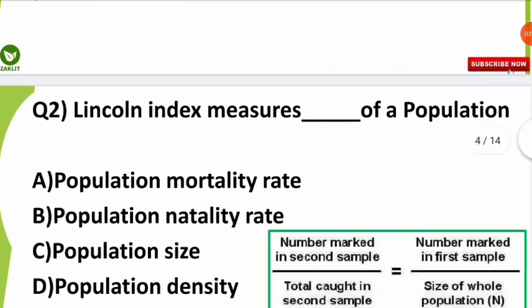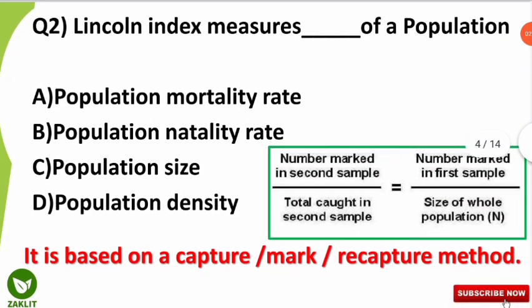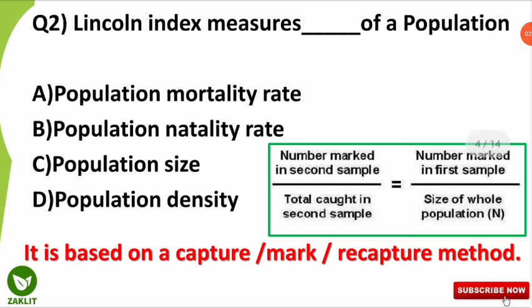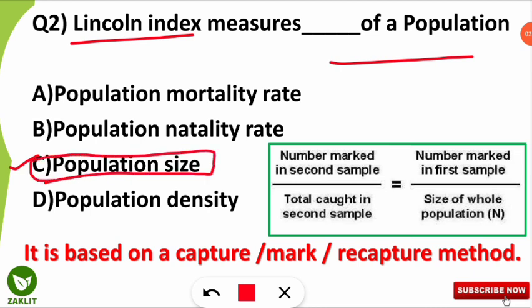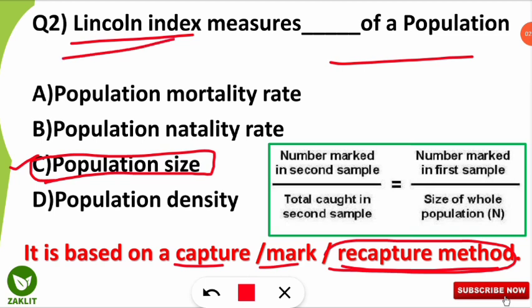The second question was from the Lincoln index: the Lincoln index measures what of a population? The correct option is option C — the Lincoln index measures population size. The formula is very important and is called the capture-recapture method or mark-recapture method.